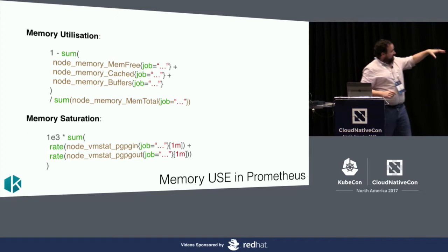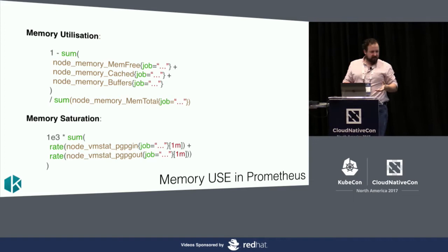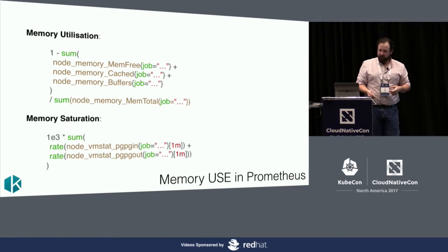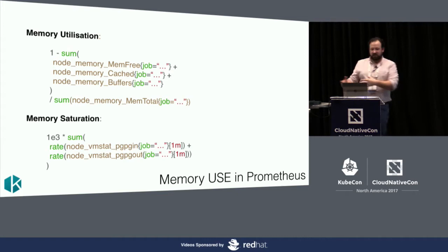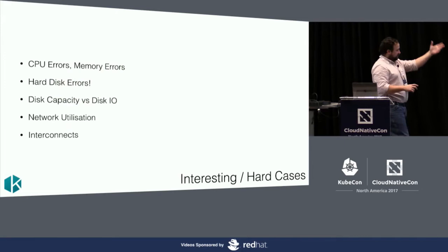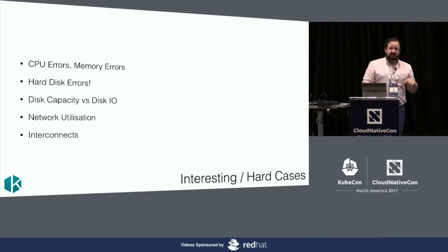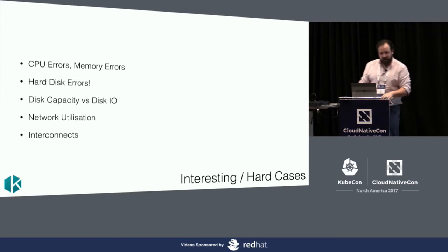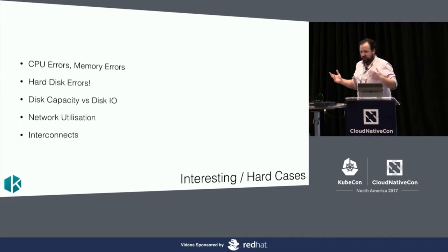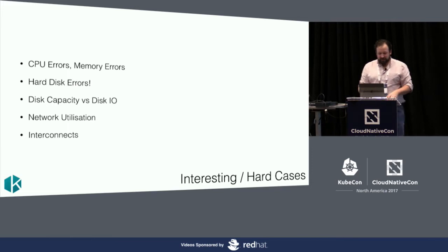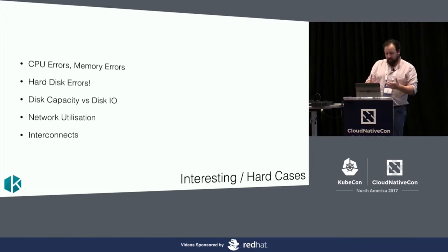Memory saturation is another example where the units are weird. The best advice I've seen for measuring memory saturation is to look at how much paging your machine is doing — if it's doing a lot, your memory is oversubscribed; if not, saturation isn't a problem. Memory errors and hard disk errors are also really hard to get a counter for. There is a counter in Sysfs, but Prometheus doesn't expose it yet — I was hoping to get it done before this talk and I'll plumb that through NodeExporter.